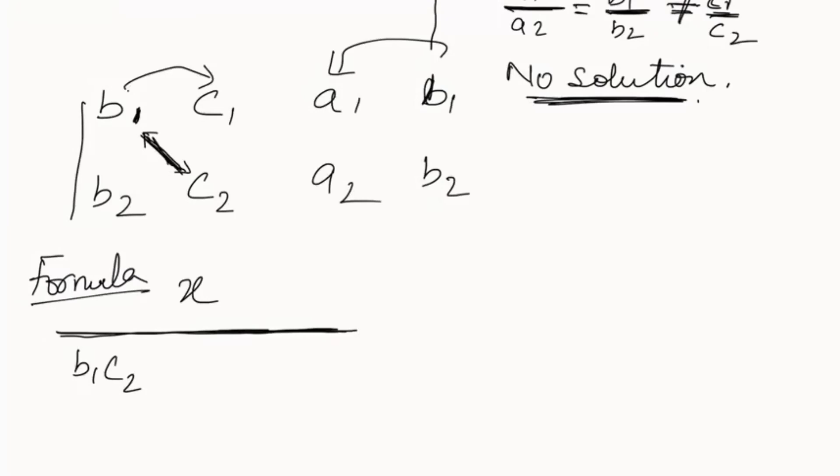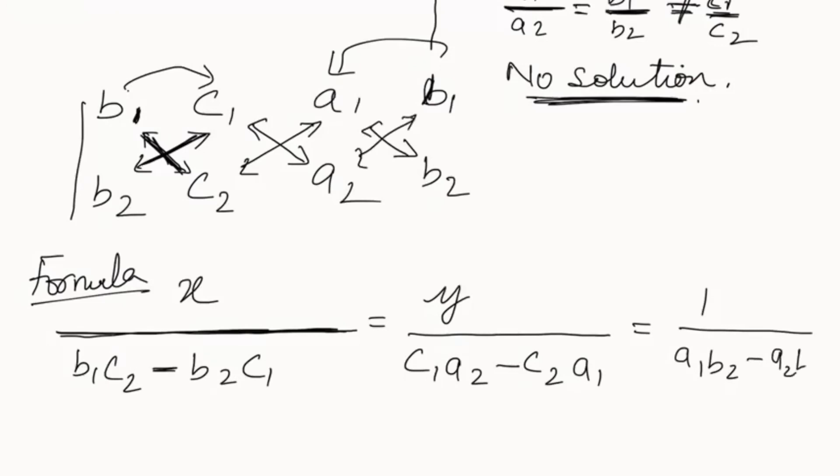Equals to y, again denominator c1a2 minus, cross multiply again, c2a1 equals to 1, again cross multiply a1b2 minus a2b1. So this is the formula to solve the cross multiplication method.